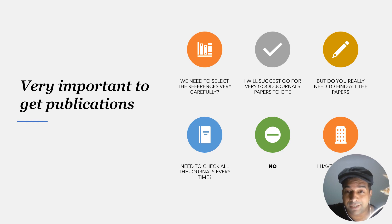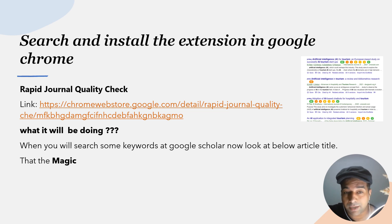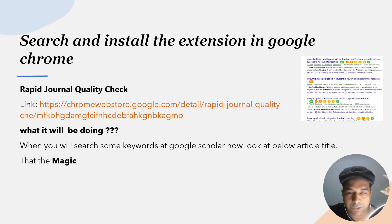I'm coming with a very easy way to find out whether the journal you are citing is good quality or not. By just installing this extension in your Google Chrome, you can get it very easily. I'm also sharing the link below the video. The extension name is Rapid Journal Quality Check — that's brilliant work, and I'm using it happily.